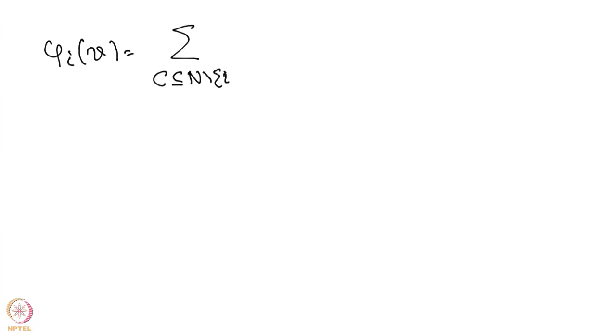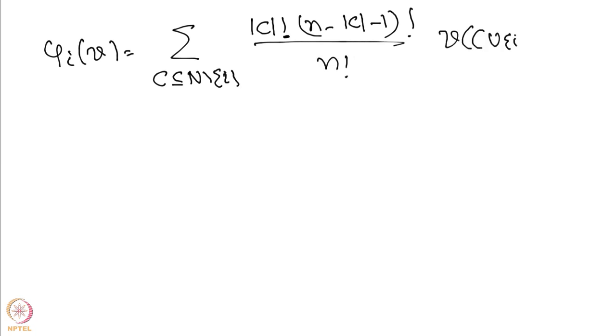The Shapley value is defined as: phi_i(v) = summation over C contained in N minus i of |C|!(n - |C| - 1)!/n! times [v(C∪i) minus v(C)]. This is an average of marginal contributions: the weight |C|!(n - |C| - 1)!/n! counts the number of orderings in which coalition C appears before player i, so the Shapley value is a weighted expectation of the player's marginal contribution.